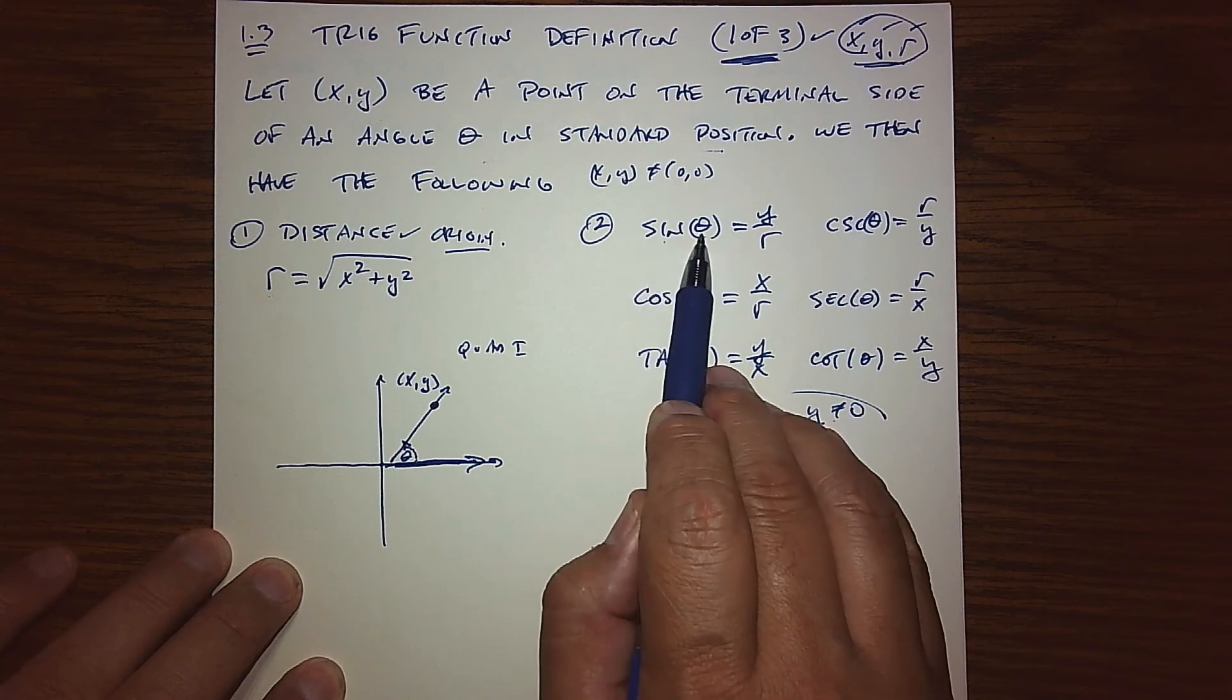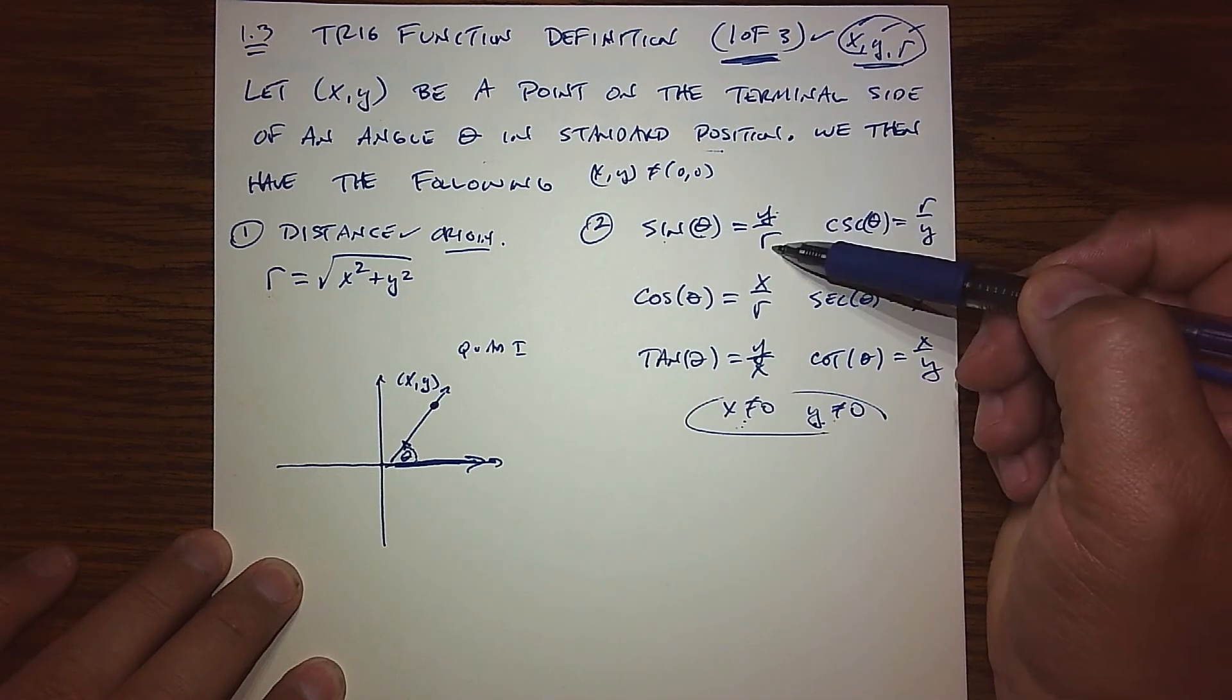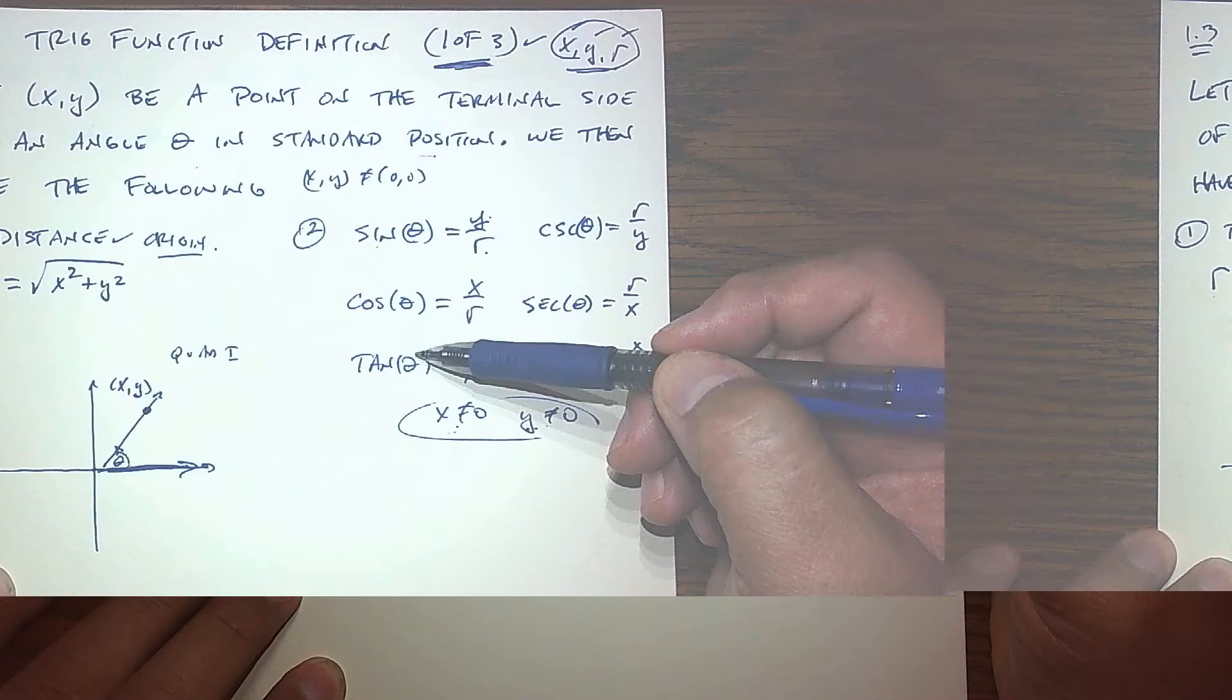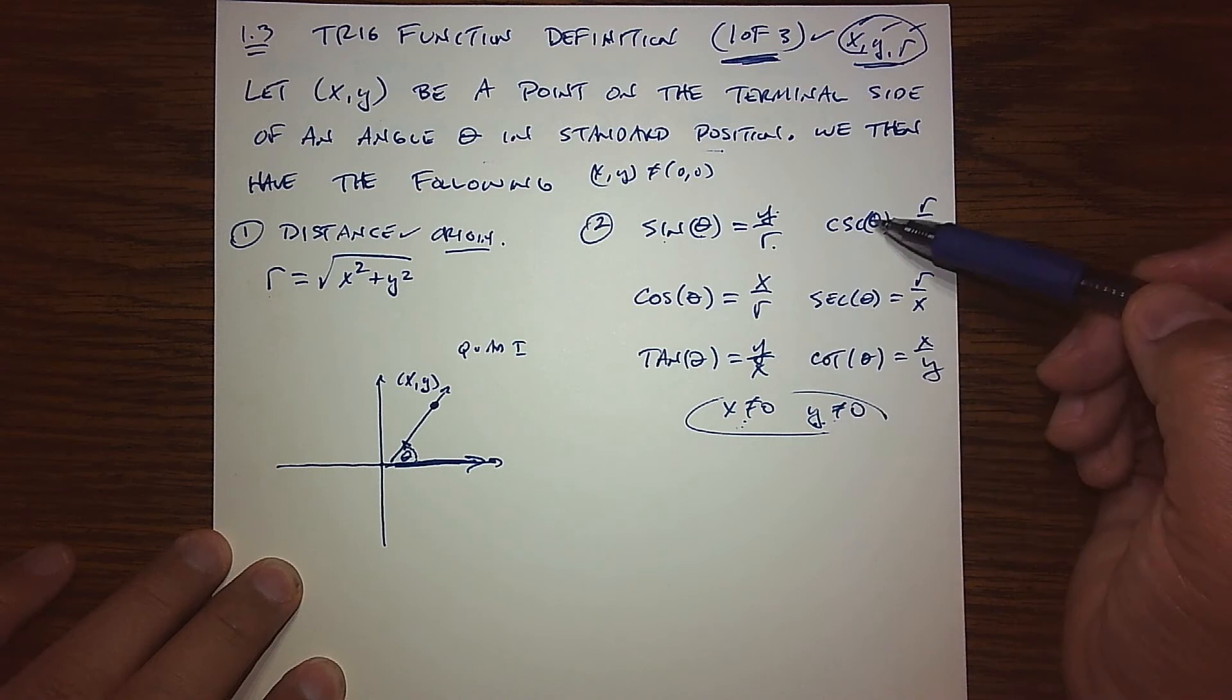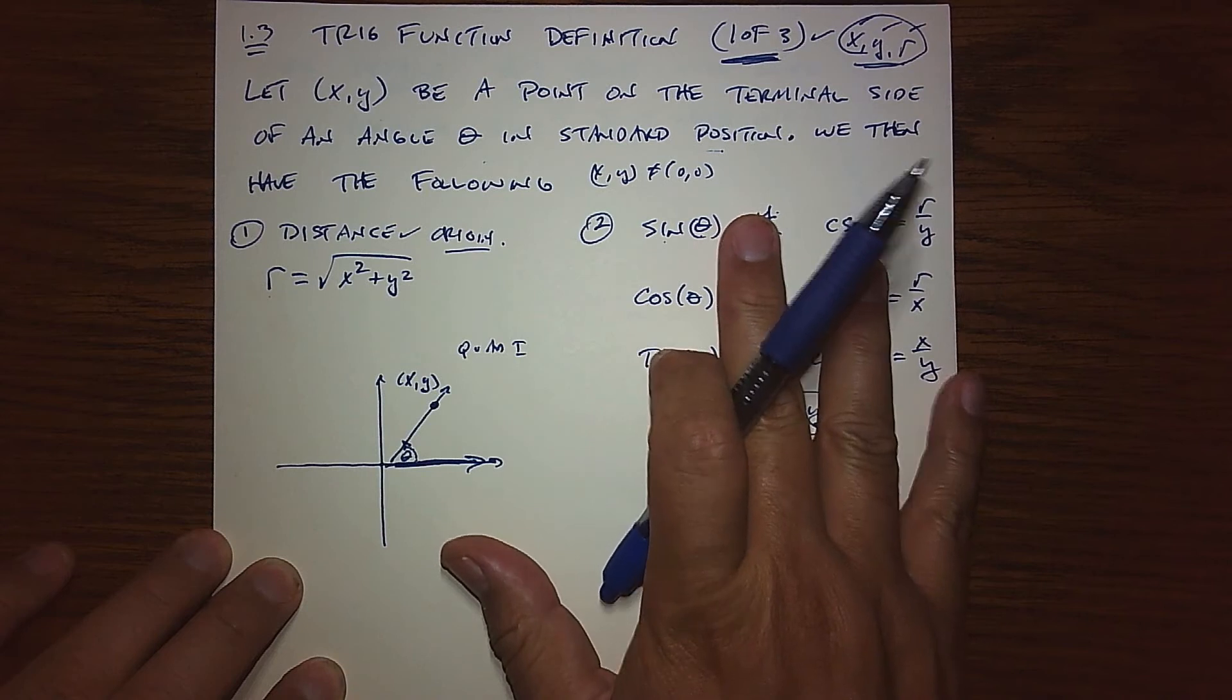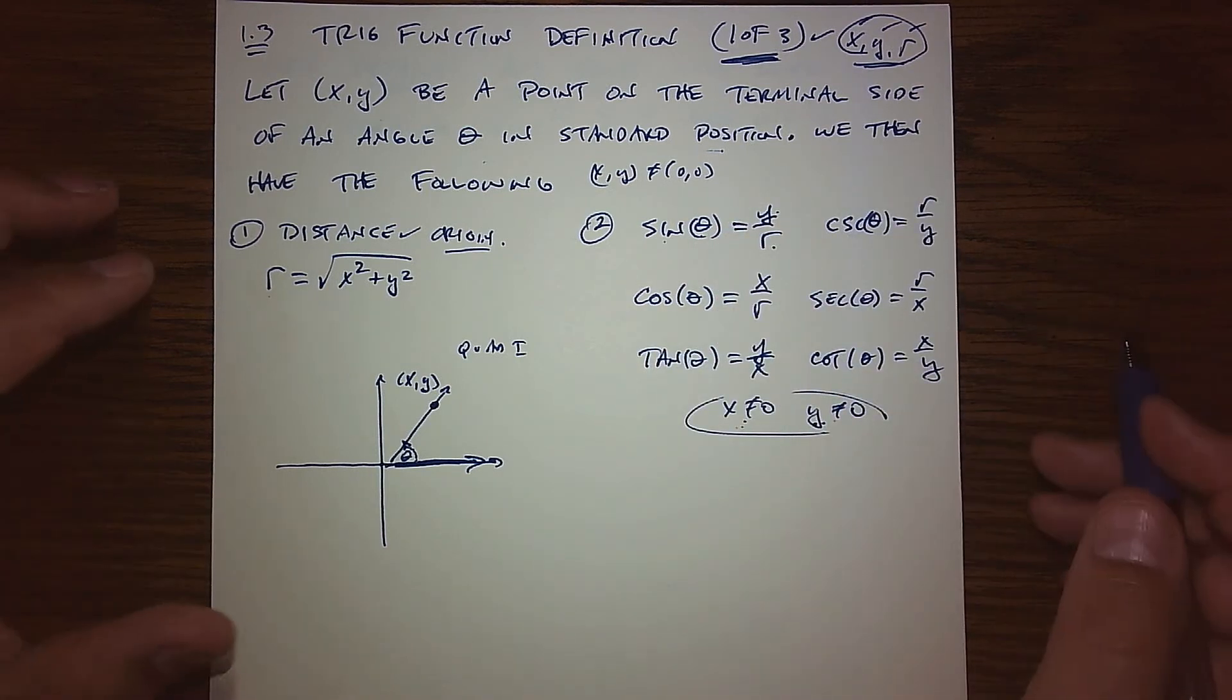The sine of the angle that's given would be the Y coordinate over that R. The cosine of that angle would be X over R. The tangent of that angle would be Y over X. And then we have the reciprocals. The cosecant of that angle is R over Y. The secant of that angle is R over X. And the cotangent of theta is X over Y. And so these are definitions. And so obviously, I have a lot to explain. Like, what the heck's going on here? Bring this to my level.